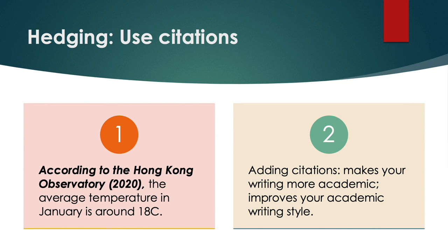Look at this example: According to the Hong Kong Observatory (2020), the average temperature in January is around 18 degrees centigrade. Now we have a reliable organisation — the Hong Kong Observatory — providing evidence on the temperature. It's hard to disagree with that. So, adding citations will make your writing more academic and improve your academic style.